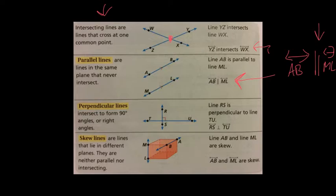Next we have perpendicular lines. They intersect to form 90 degree angles or right angles. So we could say line RS is perpendicular to line TU, or we would write it line RS, look at this, is perpendicular to line TU. So this is a perpendicular symbol.